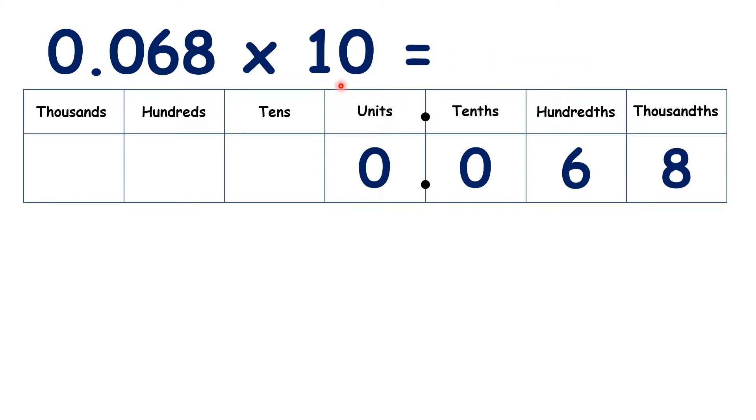Now, what is 0.068 times 10? We move the digits across. Again, we can ignore the 0 in our tens, so we have 0.68.